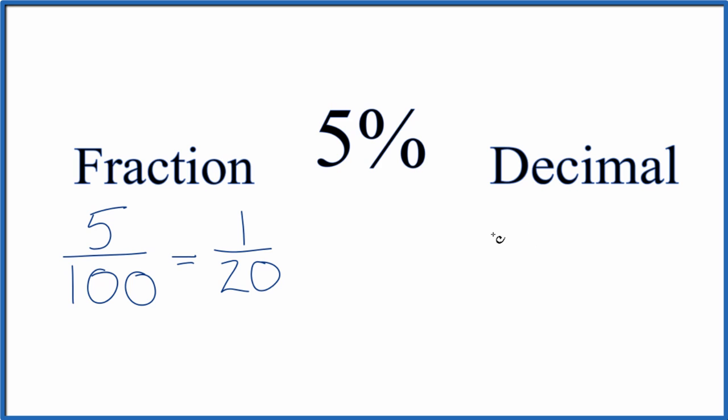As a decimal, one way to think about it is we take our fraction, 5, and divide it by 100.